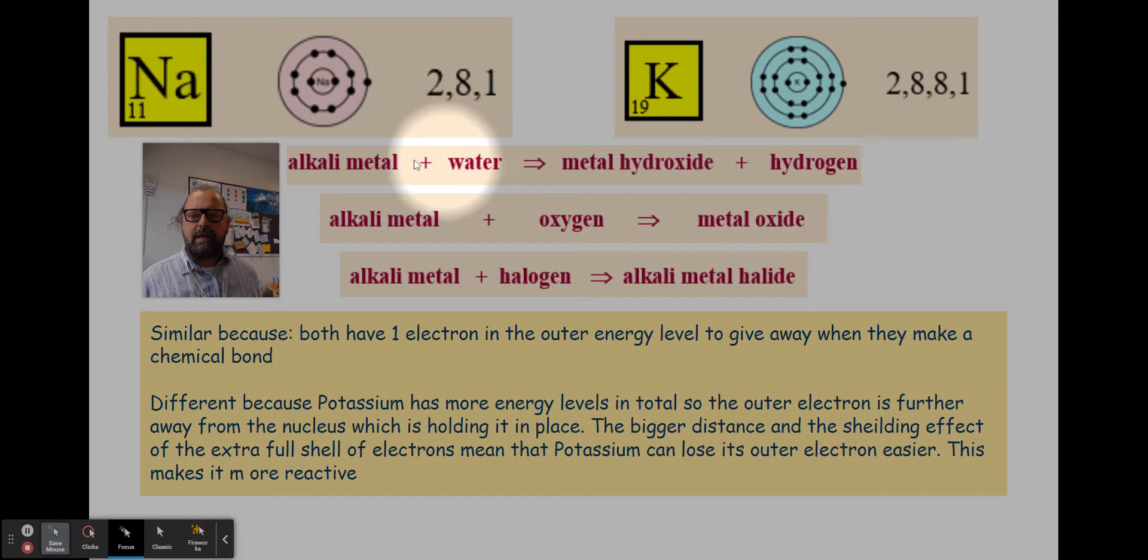So there's three equations here. Both of these metals react with water to make a metal hydroxide and hydrogen. If we pop sodium in here, we'd say sodium reacts with water to make sodium hydroxide plus hydrogen. Whereas potassium reacts with water to make potassium hydroxide plus hydrogen.